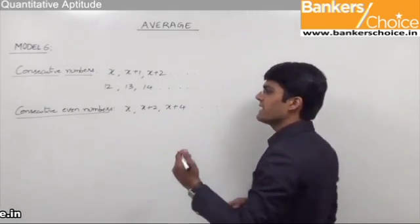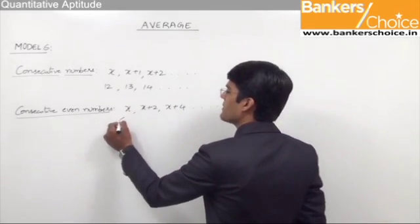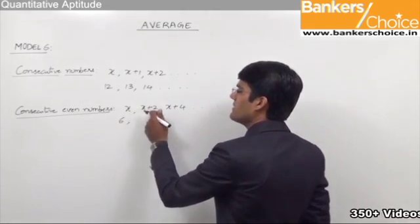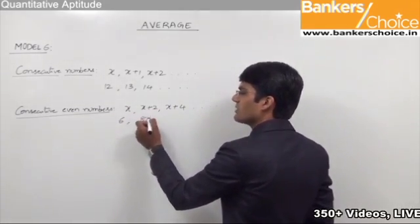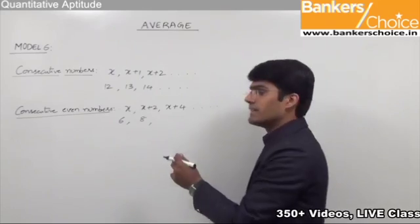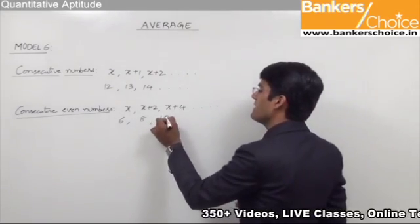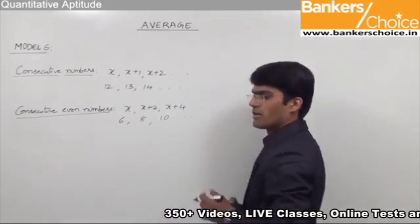Let us take an example. Let us assume x is equal to 6. So the next number will be 6 plus 2, that is 8, then 6 plus 4, that is 10 and so on.